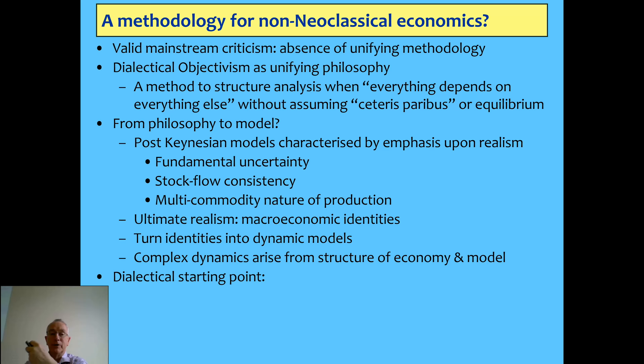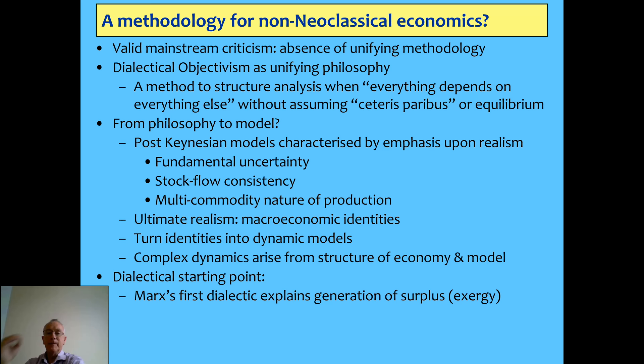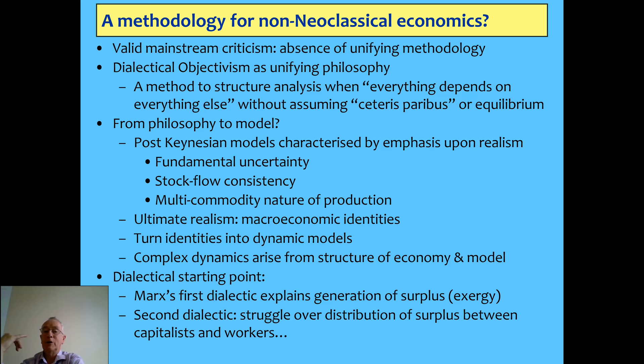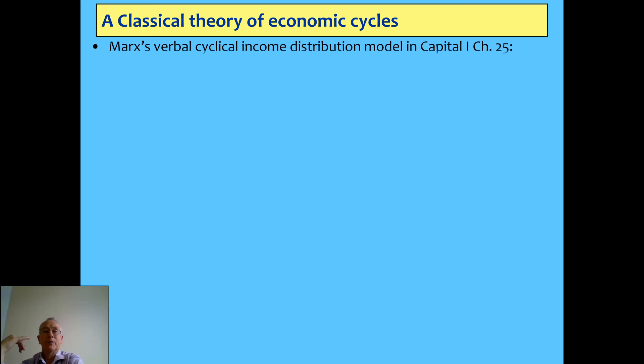I want to show you how you can turn macroeconomic identities into a basic dynamic model, which gives you the dynamics of the economy from its very structure — you don't need to go back to micro to derive it. My starting point is Marx's dialectics to explain where surplus comes from, which as I said is not labor but energy and ingenuity. The second element Marx spoke about was the struggle between workers and capitalists over the distribution of income — which has been done by Richard Goodwin.